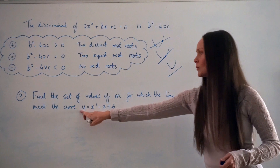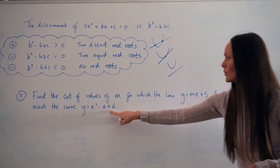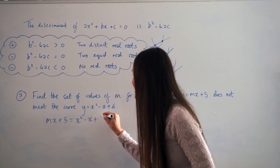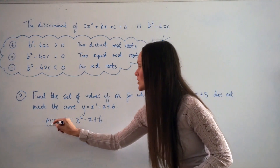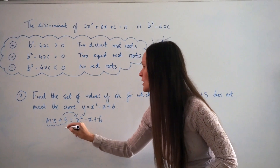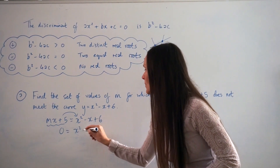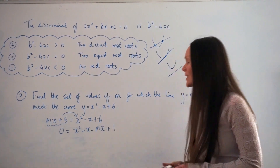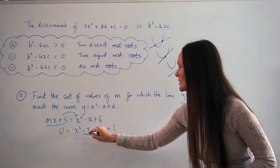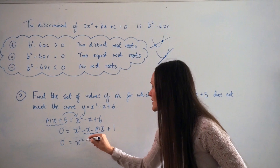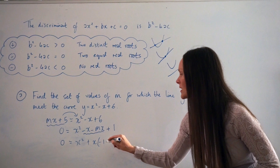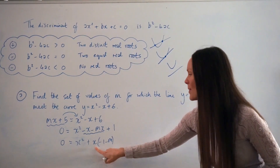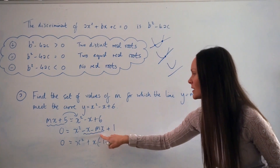Since y equals y, mx plus 5 has to equal x squared minus x plus 6. Moving everything to the right-hand side — subtracting mx and subtracting 5 — we get 0 equals x squared minus x minus mx plus 1. Factoring out x from the x terms gives x times the quantity negative 1 minus m, plus 1. Notice how you always want a positive x outside the brackets.